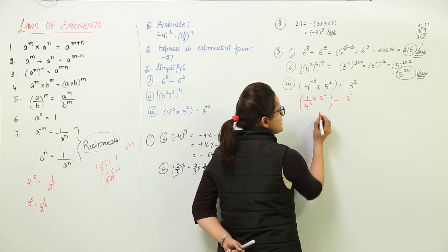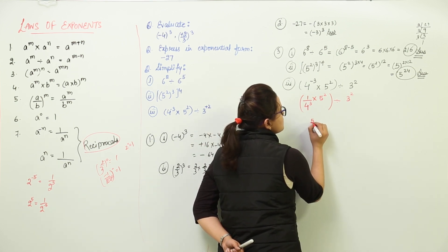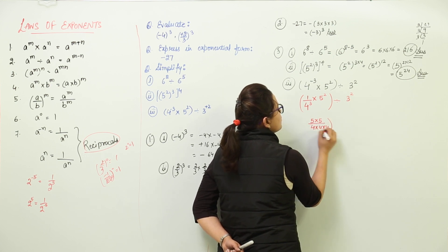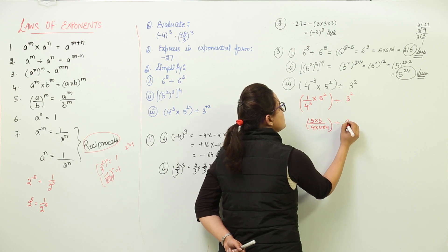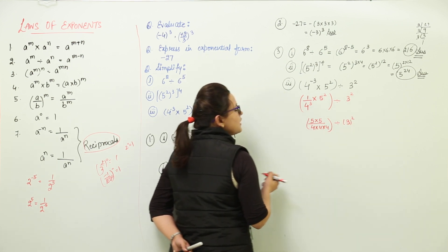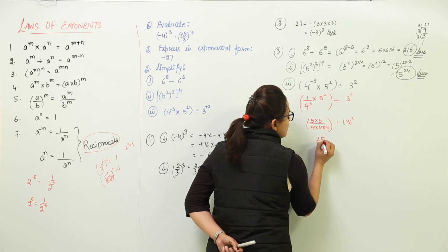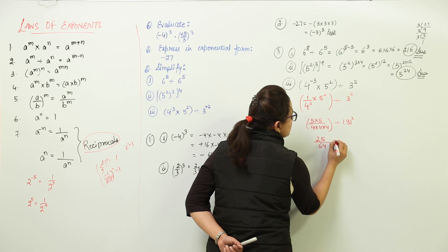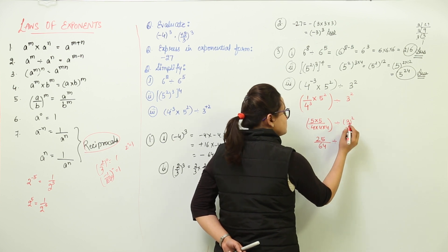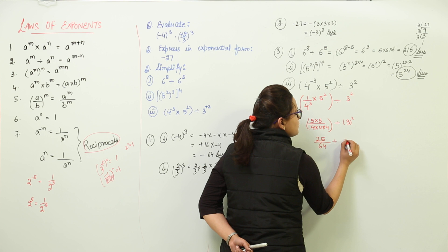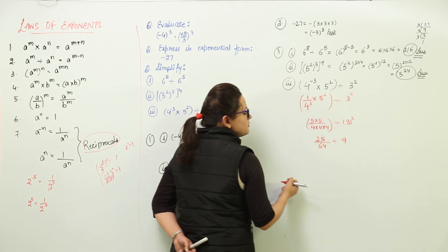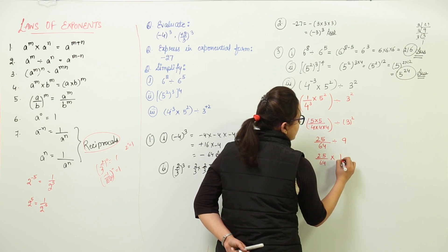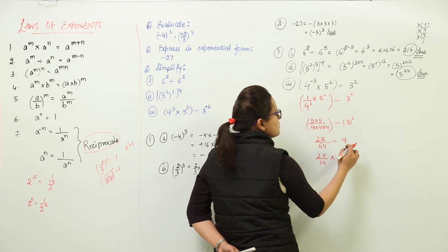First, let us solve the brackets. 5 raised to power 2 means 5 into 5, divided by 4 raised to power 3 means 4 into 4 into 4, divided by 3 raised to power 2. We multiply to get 25 over 64, divided by 3 raised to power 2. And 3 raised to power 2 can be written as 9.